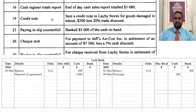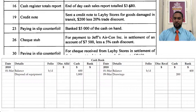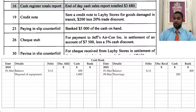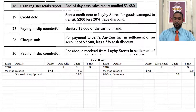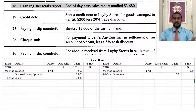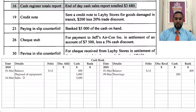On the 16th, I'm seeing a cash register totals report — an end-of-day cash sales report for $3,680. If this is the end-of-day cash sales, it means we received $3,680 into the cash book. We're going to put a debit to cash because cash is increasing. We made sales, money came in, so we debit cash and the details say 'sales' on the 16th.